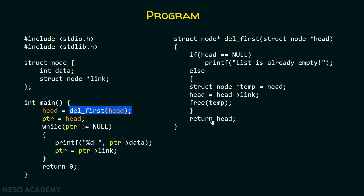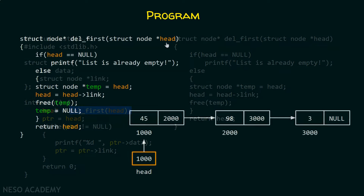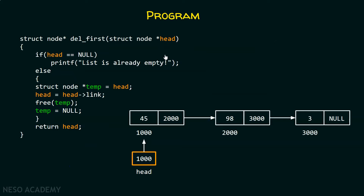Here is how this function looks. In the delFirst function, we are passing the head pointer, which will receive the address contained in head from the main function. Because head has received address 1000, this head will also point to the first node of the list. In this if construct, we are checking whether head is equal to null — that means we are checking if the list is already empty. If so, we print the message: list is already empty.